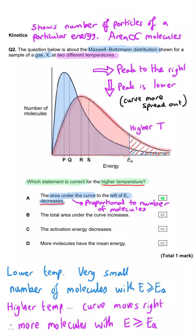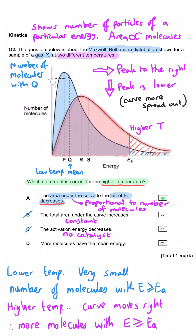Checking the other options: the total area under the curve does not increase — it is the same for both temperatures because we're not changing the number of molecules. The activation energy does not decrease — it stays the same; only the number of molecules with that energy changes. More molecules have the mean energy is also wrong: at the lower temperature the mean energy is Q, but at the higher temperature it shifts to S and we can see fewer molecules have that mean energy. So A is correct.